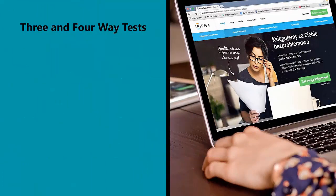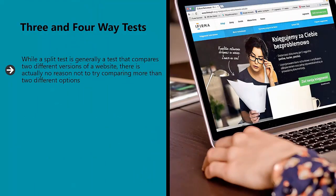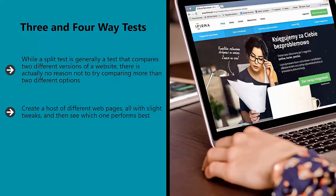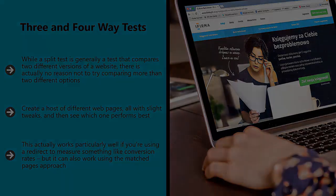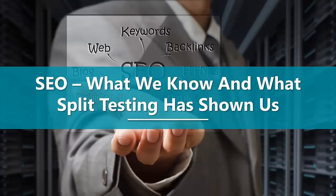Three and four-way tests. While a split test is generally a test that compares two different versions of a website, there is actually no reason not to try comparing more than two different options. Create a host of different webpages, all with slight tweaks, and then see which one performs best. This actually works particularly well if you are using a redirect to measure something like conversion rates, but it can also work using the matched pages approach. In theory, this can help you save a lot of time, though it can, of course, also make the whole process a fair bit more complicated.